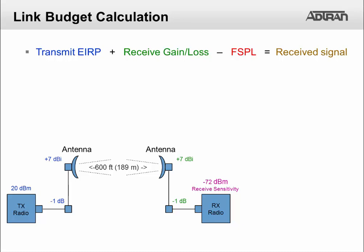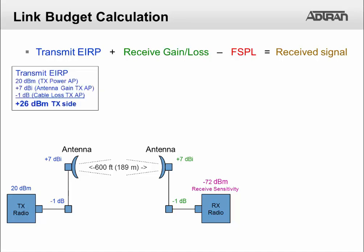In this demonstration we'll calculate the link budget required when antennas connected to two buildings are 600 feet apart. Let's start with our known values. On the left we have our transmitting radio with the transmit power set at 20 dBm.